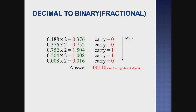Decimal to binary in fractional part. If you look at the question, there is a decimal point — for example 0.188 base 10. This is the last example. We use the multiply by 2 method. Multiply by 2: 0.188 into 2 is 0.376, so carry is 0 and decimal is 0.376.